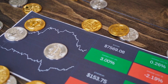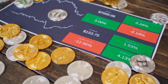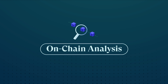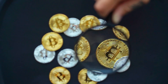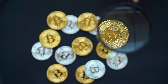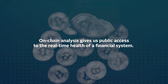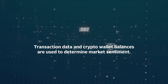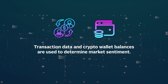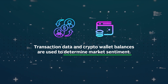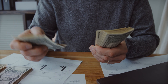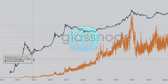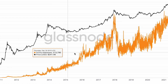Now that you have an overview of crypto analysis in general, let's focus on on-chain analysis. Just by looking at the name, we can tell that this type of analysis is unique to cryptocurrencies, unlike the other two, since it involves blockchain technology. Basically, on-chain analysis gives us public access to the real-time health of a financial system. The information extracted — say, transaction data and crypto wallet balances — is used to determine market sentiment and eventually to make investment decisions. For example, if a new token just launched but you're still undecided whether to invest, information gathered from on-chain analysis can help you make that decision.